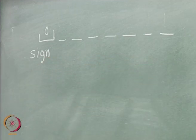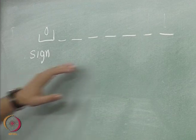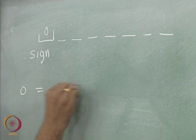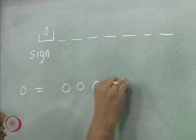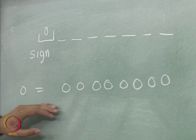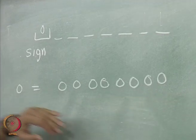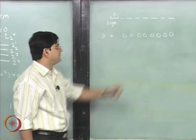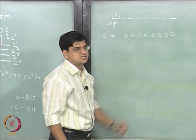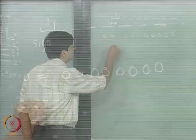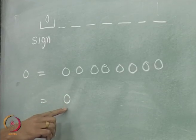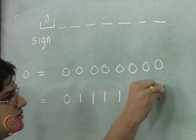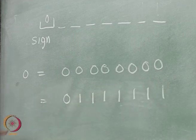The smallest non-negative number that you can represent is of course going to be 0, and 0 is going to be equal to 0 0 0 0 0 0 0 0 — that is, 8 zeros representing all bits set to zero.